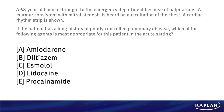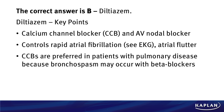The correct answer for this question is B, diltiazem. So what do we need to know about diltiazem? It's a calcium channel blocker and an AV nodal blocker. Specifically, it controls rapid atrial fibrillation — and for this question, that's what it was. Going back to the EKG, something that should have stood out to you is that characteristic irregularly irregular rhythm. Notice those QRS complexes — they're all over the place, with different spacing between them. That's what you have to think about here. You've got to be able to recognize this.